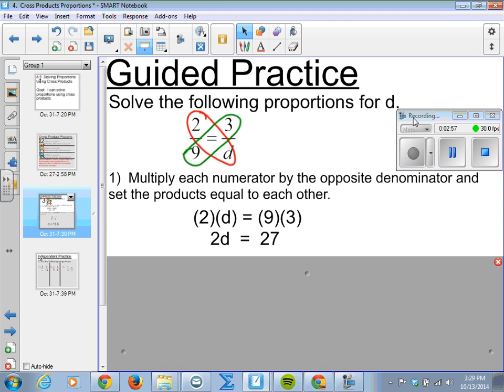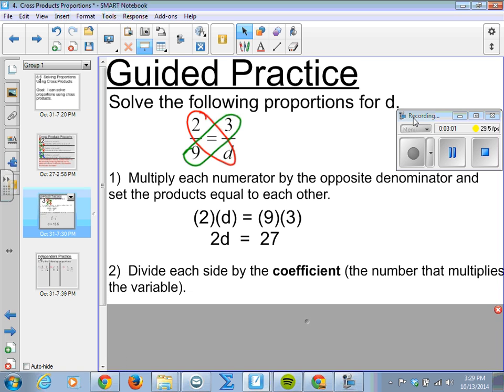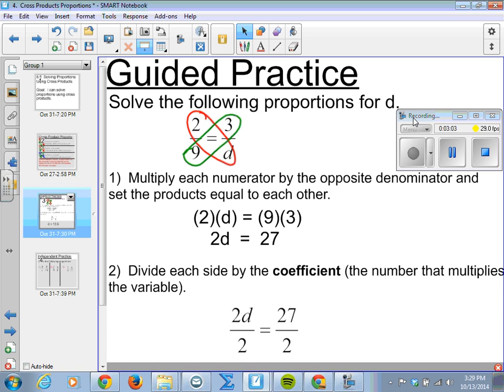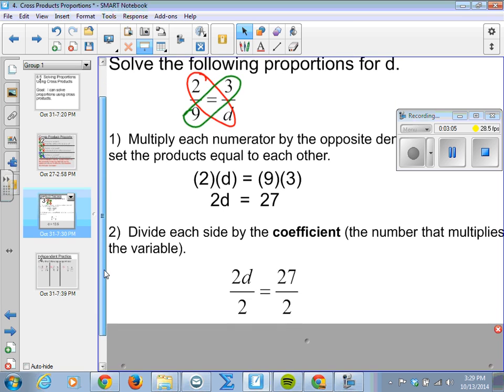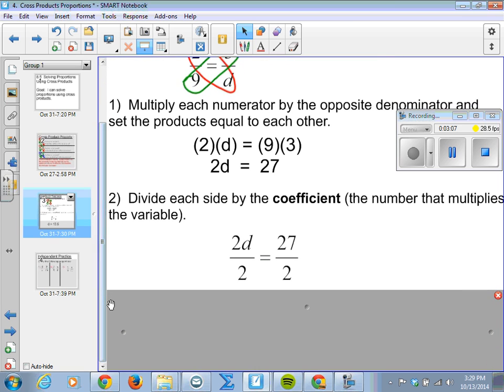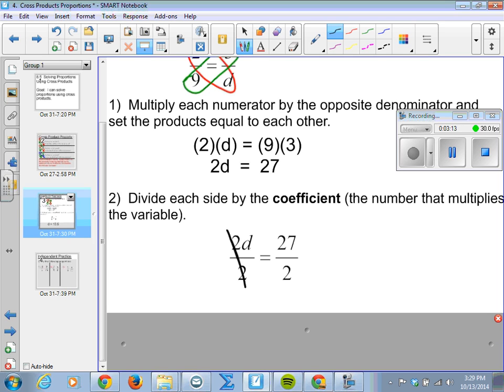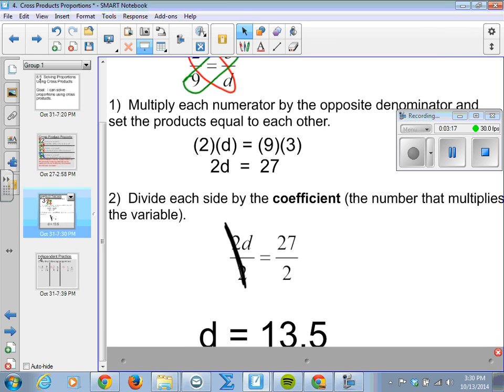So, 2 times something equals 27. Then we divide each side by the coefficient. That is the number that multiplies the variable. So, 2d divided by 2 leaves us just with d. And 27 by 2 equals 13.5. And there is our answer. d equals 13.5.